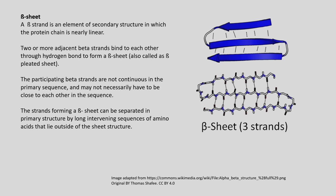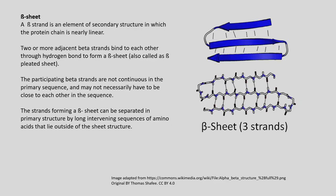Beta strands are secondary structure elements in which the protein chain is nearly linear, with no helical structure. Two or more adjacent beta strands bind to each other through hydrogen bonding to form a beta sheet, also called a beta pleated sheet. The participating beta strands are not necessarily continuous in the primary sequence and may be separated by long intervening sequences of amino acids that lie outside the sheet structure.